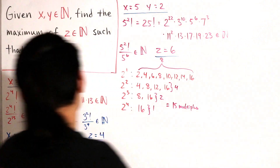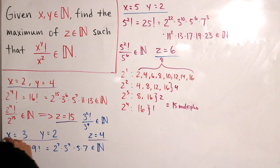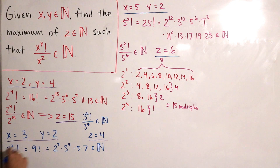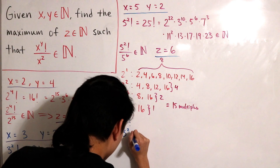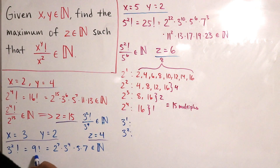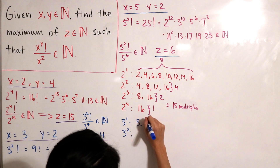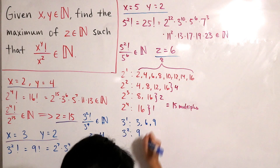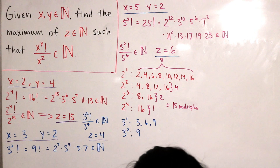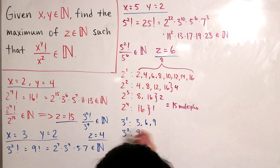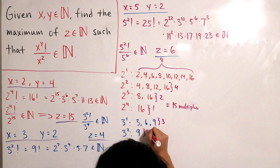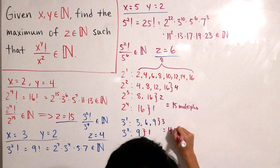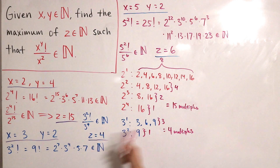Let's try the same for x equals 3 and y equals 2. We look at multiples of powers of 3 up to 3 squared, which is 9. For 3 to the power 1, the multiples up to 9 are: 3, 6, and 9 — that's 3 multiples. For 3 squared (9), it's just 9 itself — that's 1 multiple. Adding these up: 3 plus 1 equals 4 multiples total. And notice we just showed that z equals 4, so there's again a clear correlation.